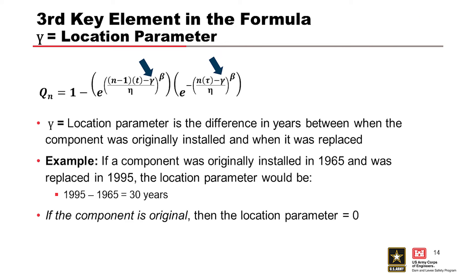Another important parameter, or one of the key parameters in the formula, is the location parameter. Location parameter is the difference in years between when the component was originally installed and when it was replaced. So, an example is, if a component was originally installed in 1965 and replaced in 1995, that location parameter would then be 30 years.